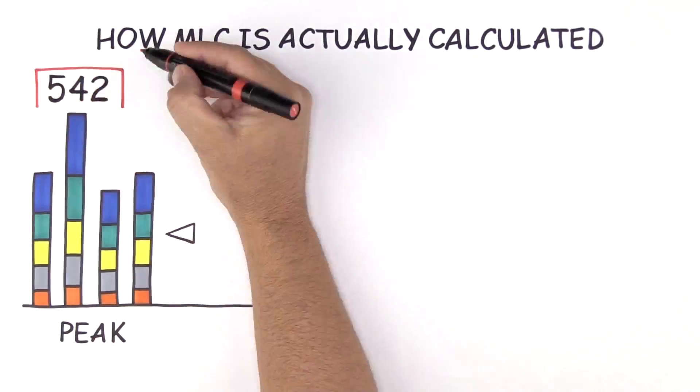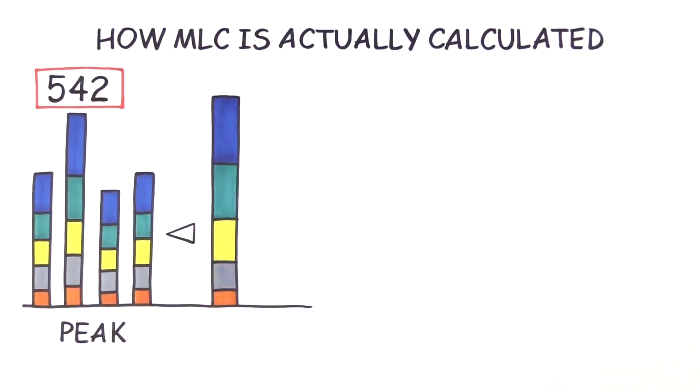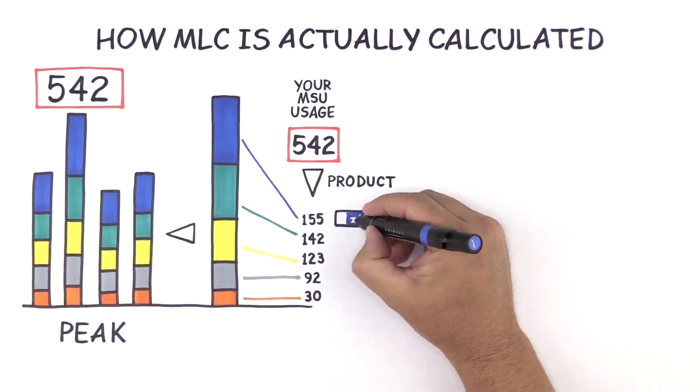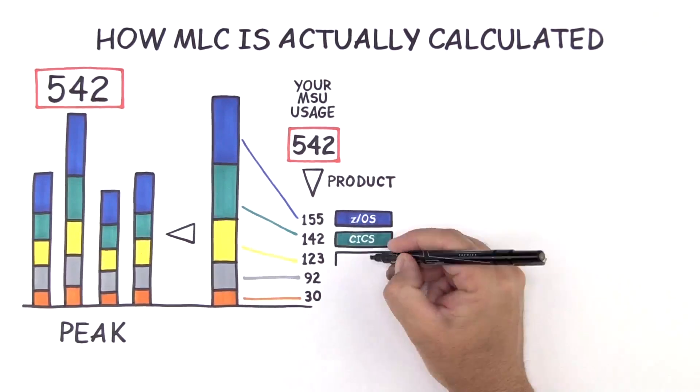The peak, or the highest average usage during the month, is identified and used as the basis to calculate your MLC bill. Now, this is where it gets interesting, and complicated.